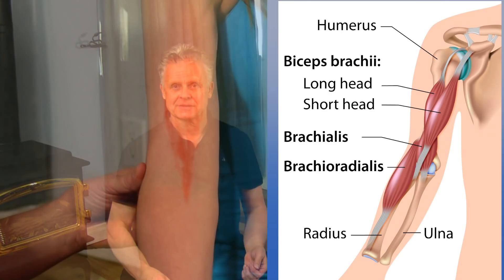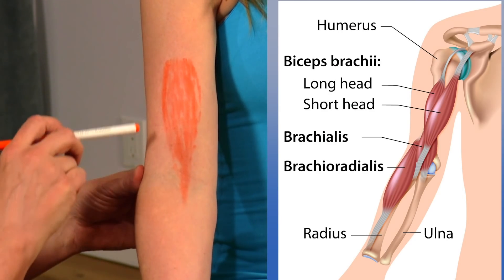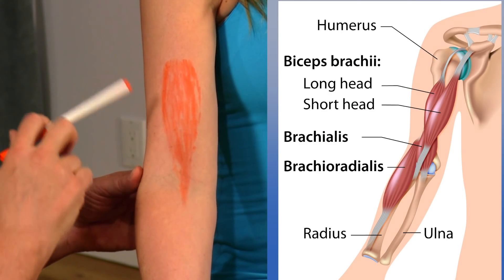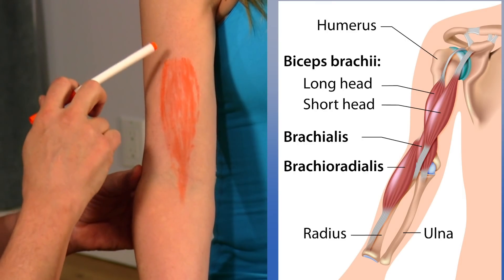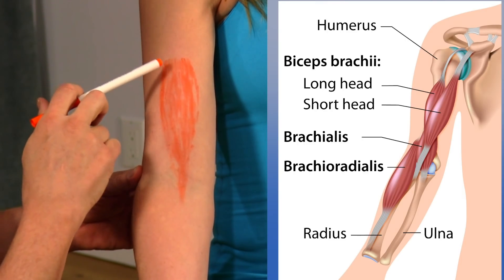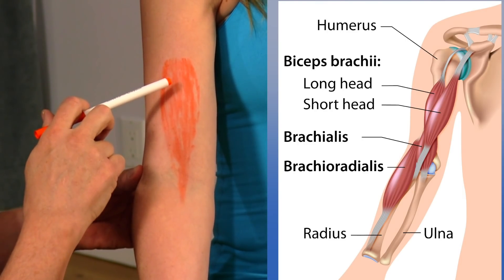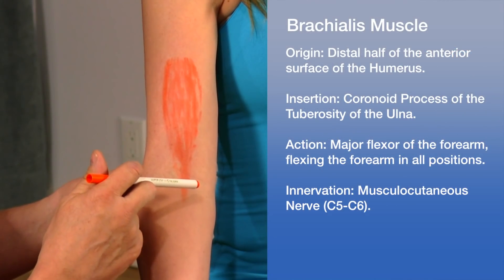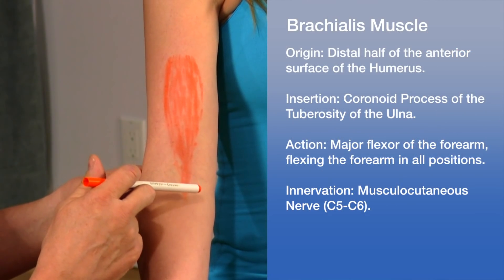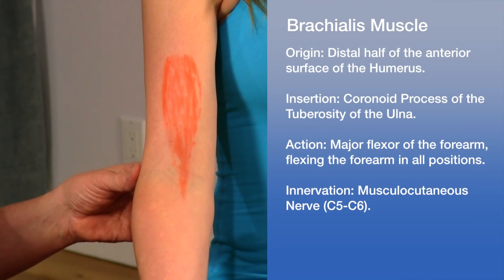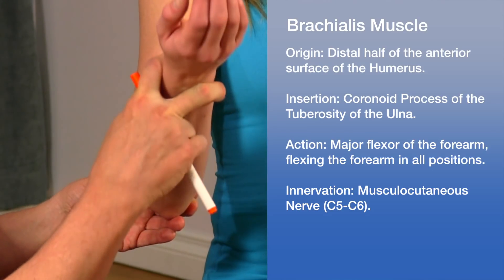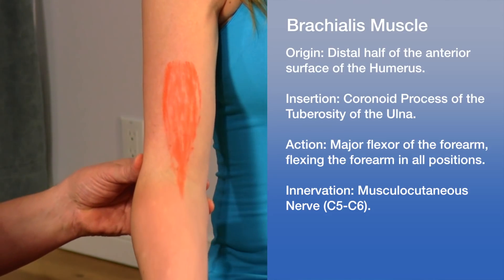The first muscle involved in elbow flexion is the brachialis. It arises from the anterior surface of the distal humerus and inserts on the coronoid process of the ulna. This muscle's major action is as a flexor of the elbow.